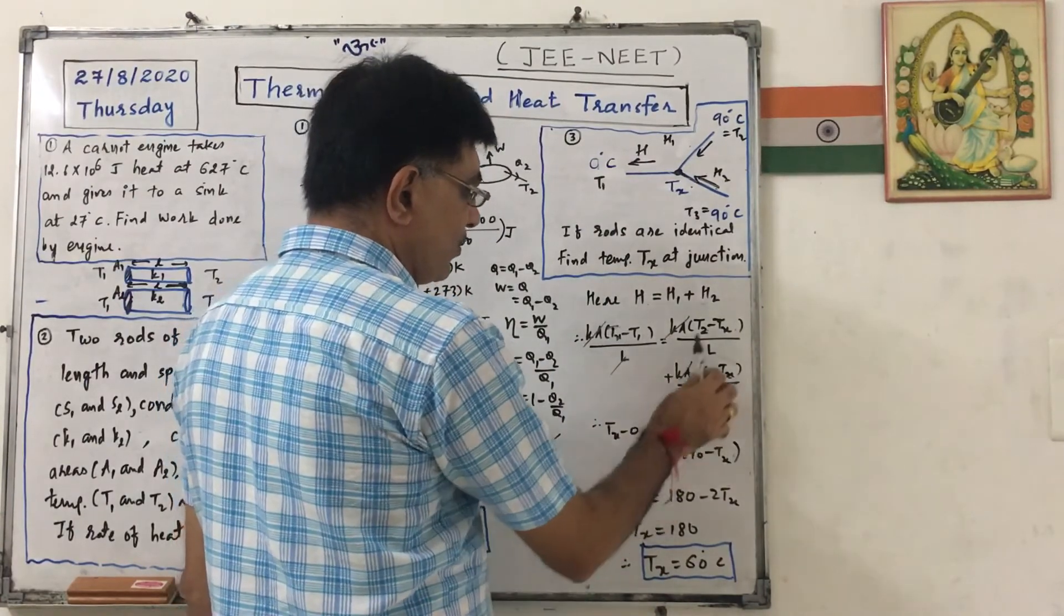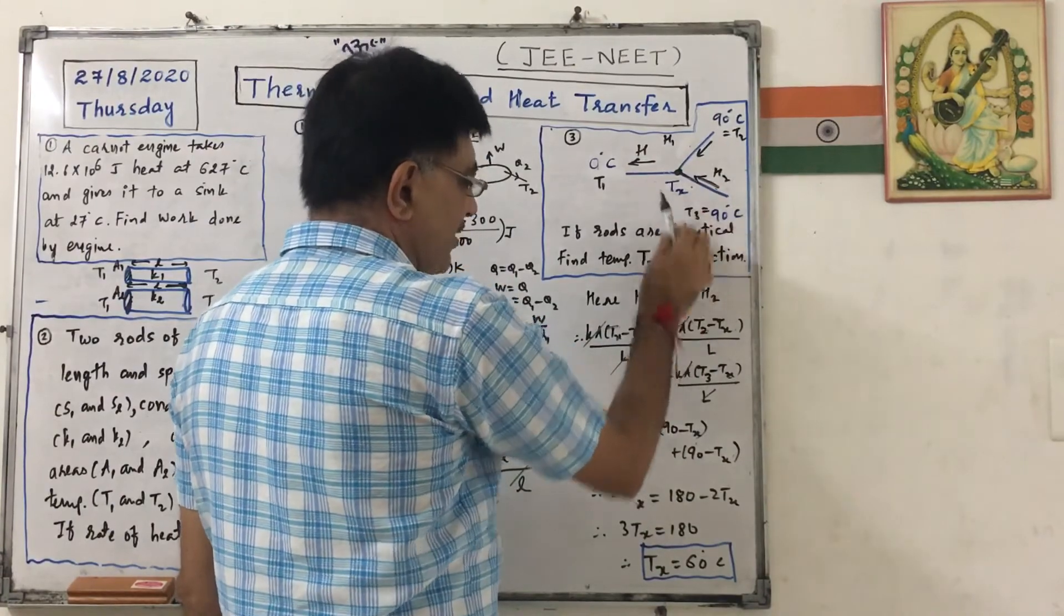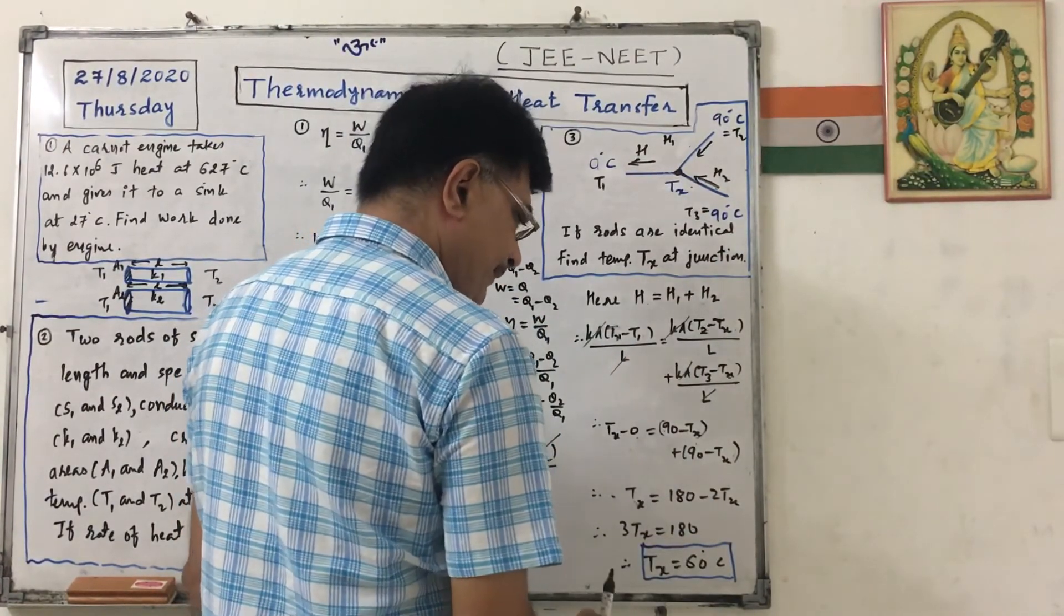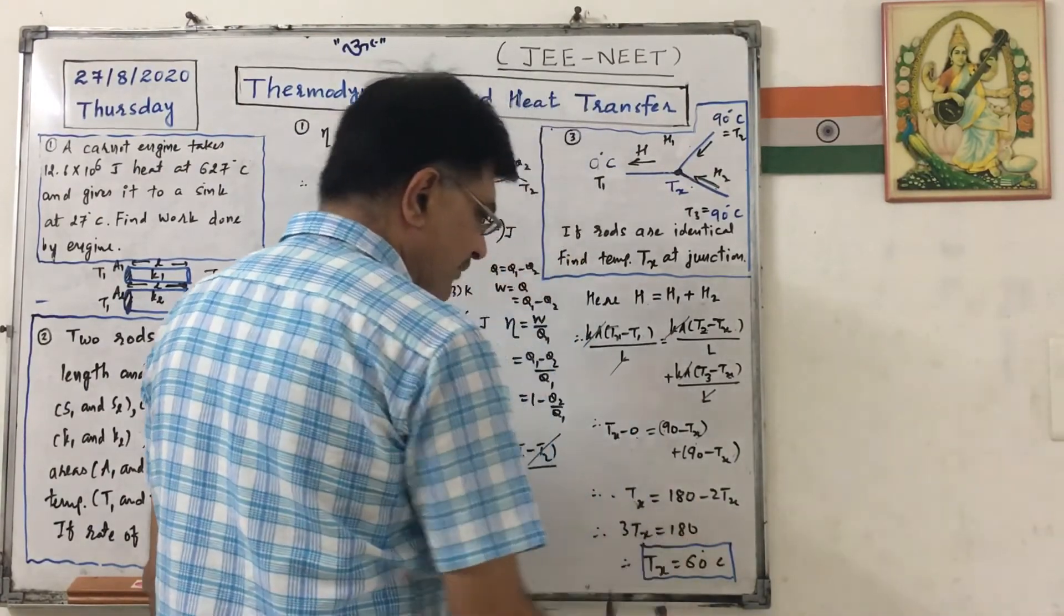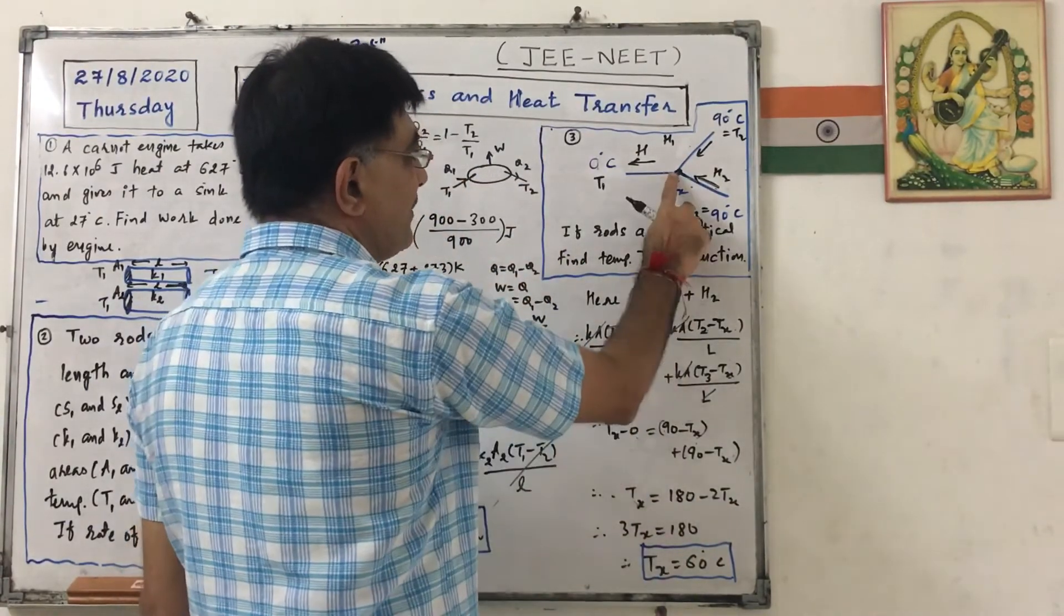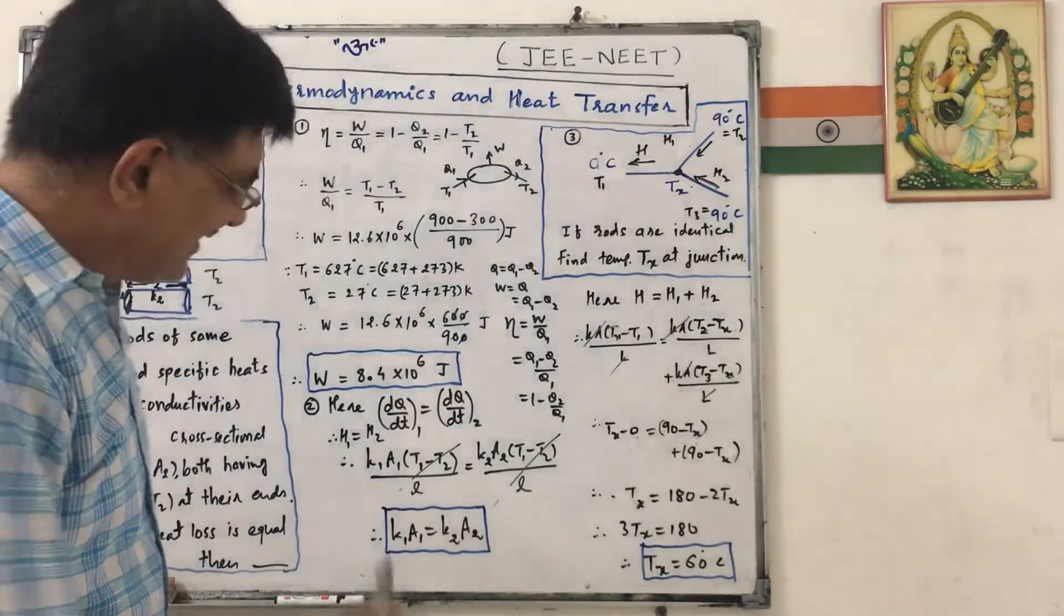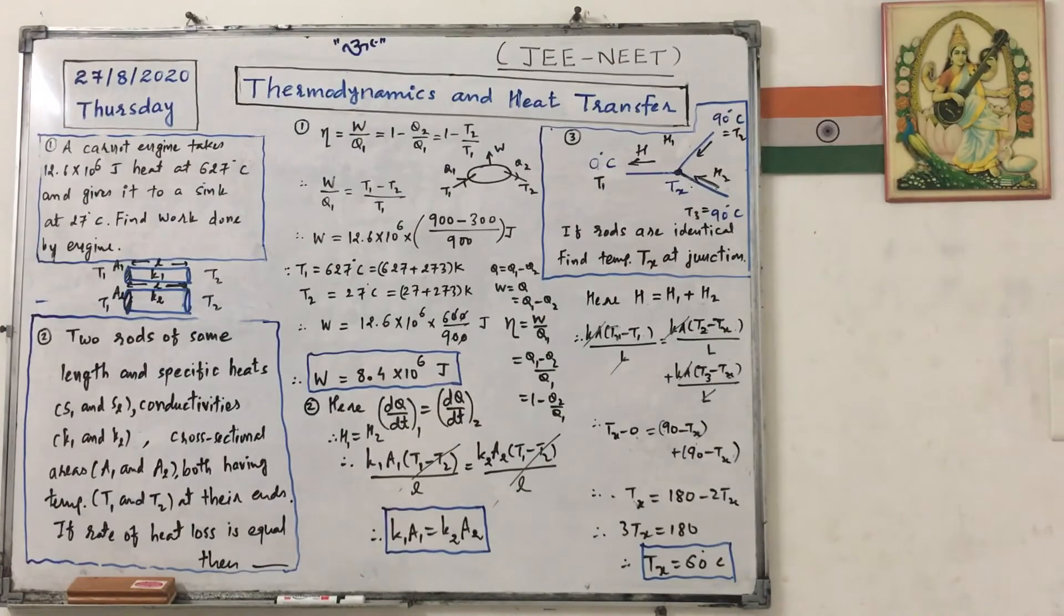So Tx minus 0 equals to 90 minus Tx plus 90 minus Tx. So Tx will be equal to 180 minus 2Tx, so we can write 3Tx equals to 180. So Tx, that is temperature of junction, is 60 degrees Celsius. Take a screenshot. Bye bye!